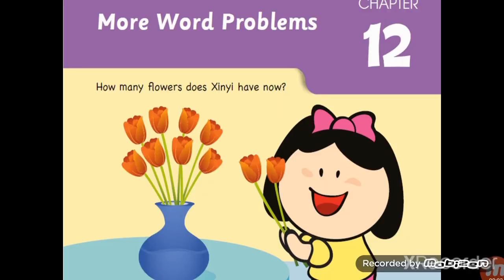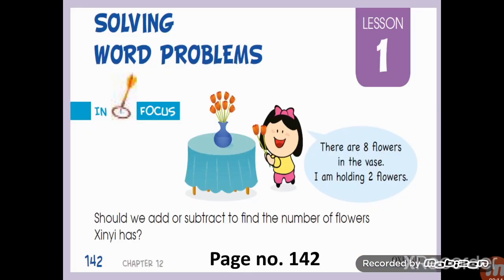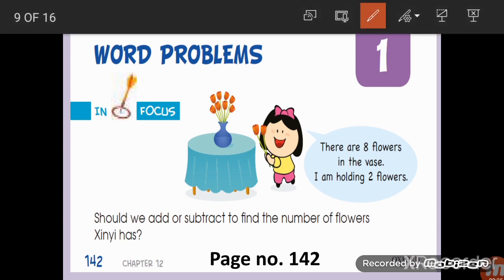Now we will look at examples from the textbook. This is Chapter 12 of your Primary Mathematics — the page number is 142. Keep it in front of you. We will look at the examples from here and then solve some word problems together. Let's start from the first one.